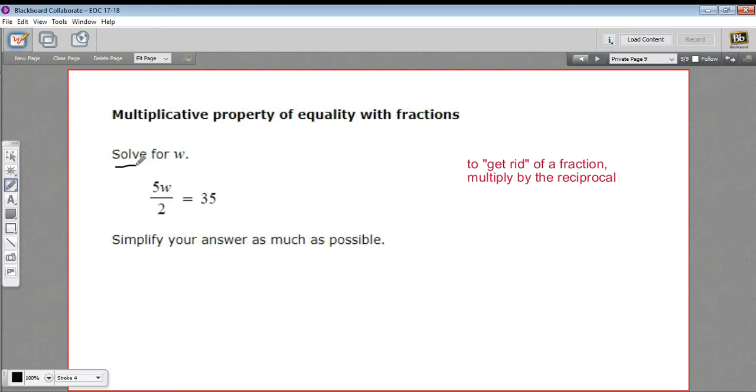In this problem, we're being asked to solve for w. And when we solve for a variable, we want to get the variable alone on one side of the equals sign and usually a number on the other side.